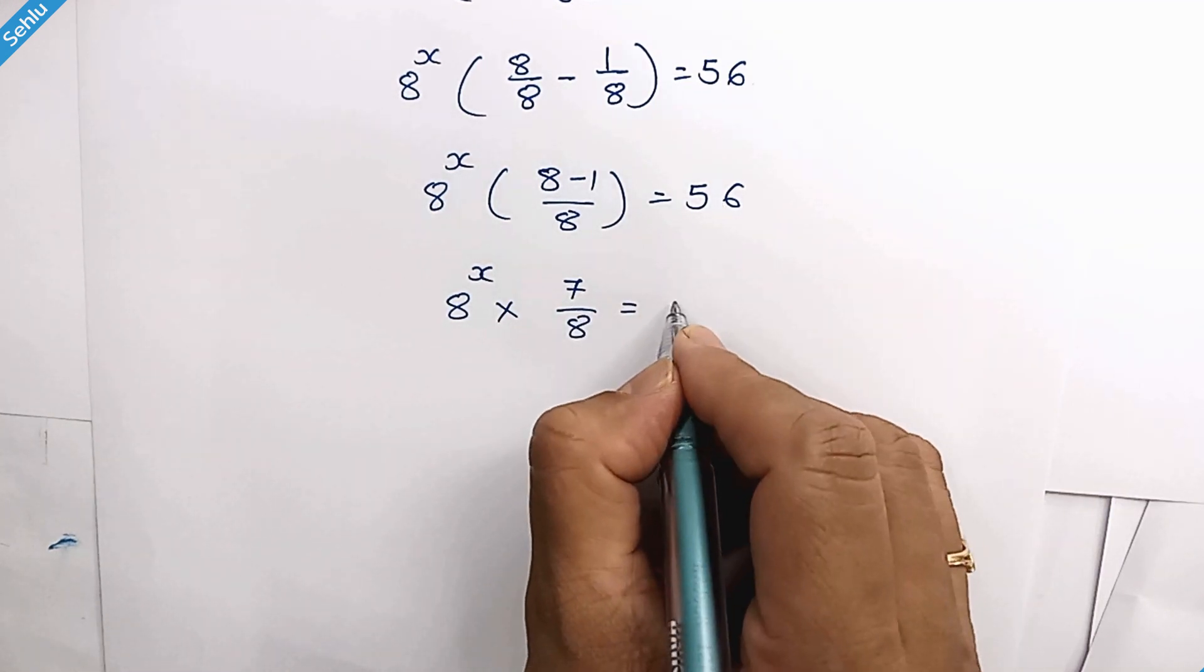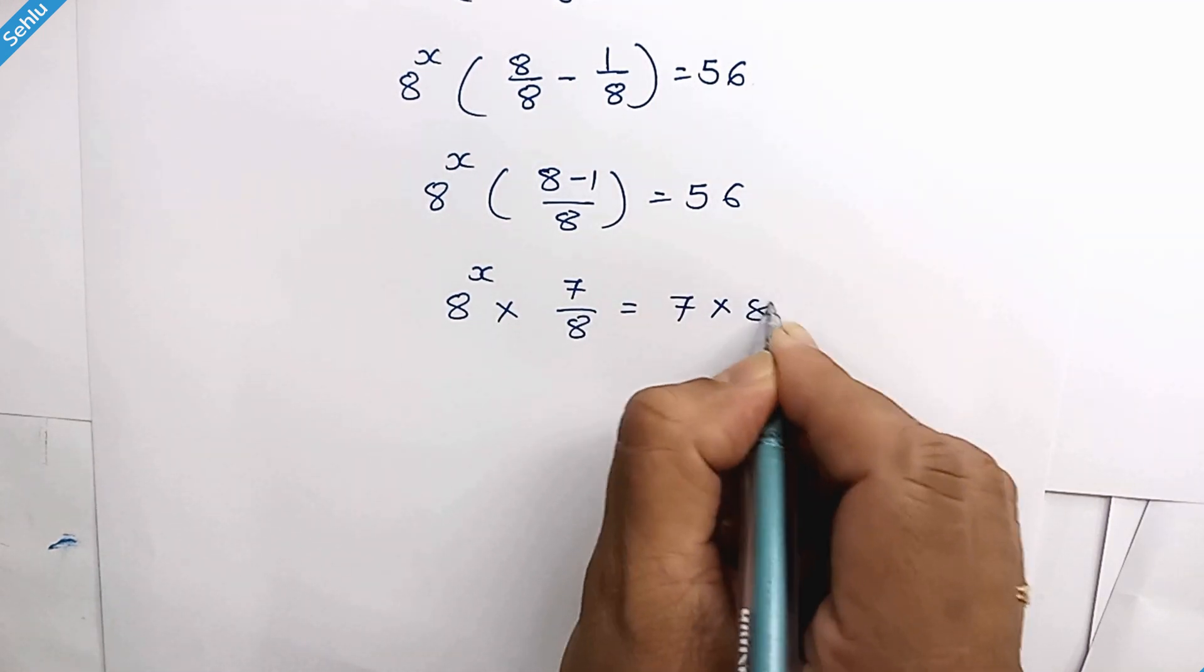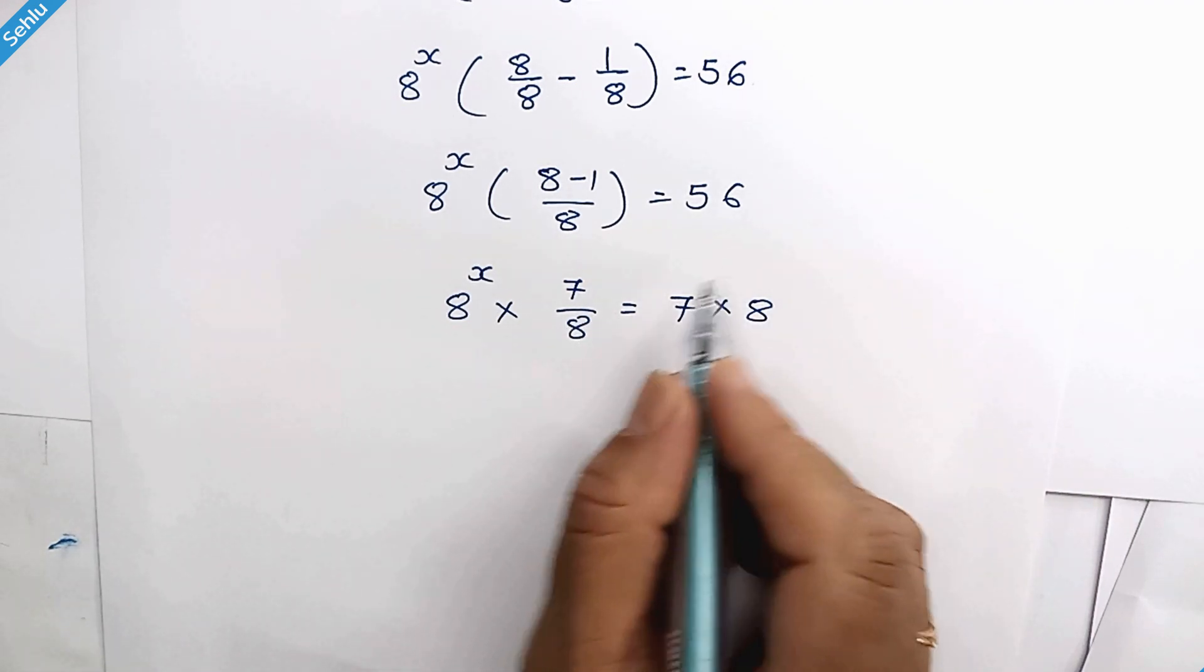And 56 can be written as 7 multiplied by 8. And now we can cross multiply this.